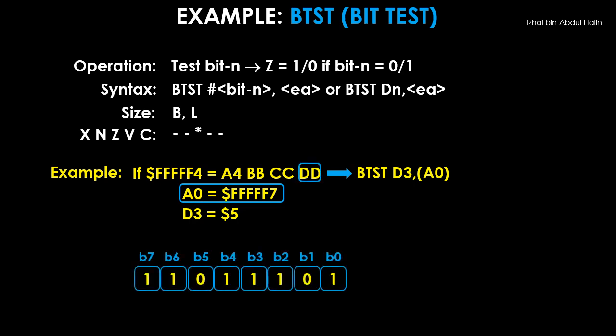Now the BTST instruction uses the value in D3 to know which bit is to be tested. When bit 5 is tested, its value is 0. This changes the Z flag to 1. The status register is then updated.